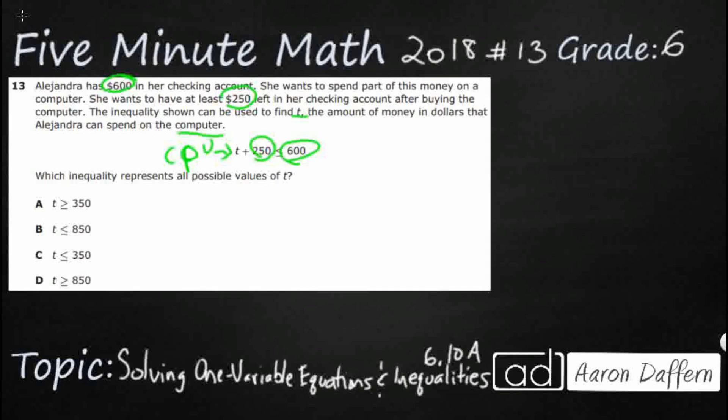So we've got two ways we can solve this. First, let's just take a look at our answer selections. We've got $350 showing up twice, and we've got $850 showing up twice. So let's just plug both of those in.